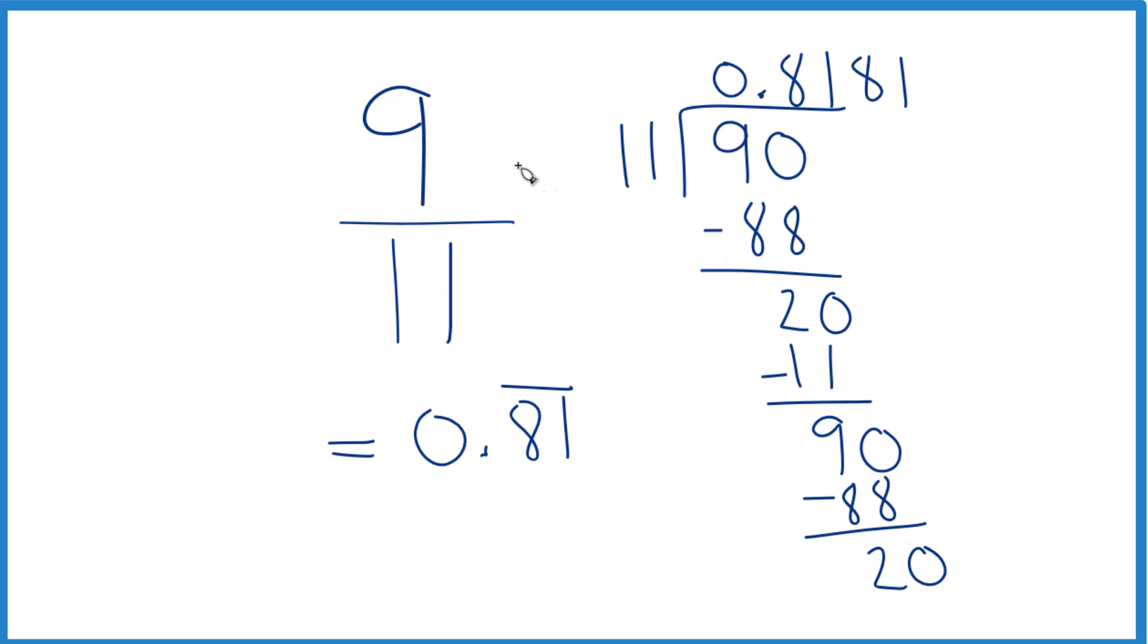Either way when we convert the fraction 9 elevenths to a decimal we get 0.81 and that 81 repeats.